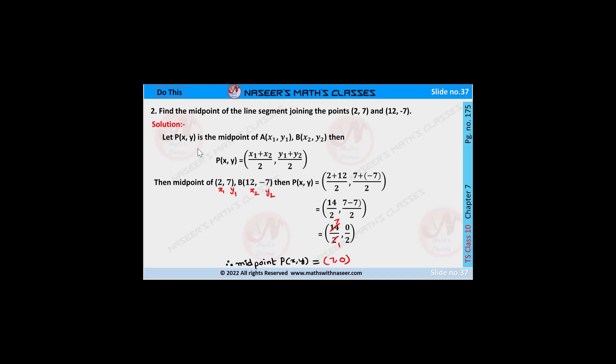We already know that if P(x,y) is the midpoint of A(x1,y1) and B(x2,y2), then midpoint P(x,y) is given by (x1+x2)/2, (y1+y2)/2.